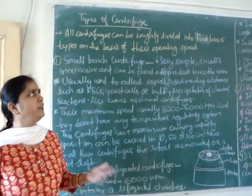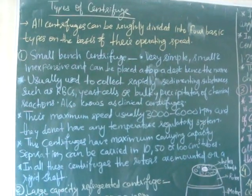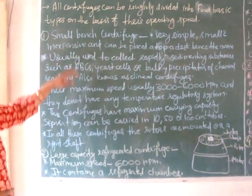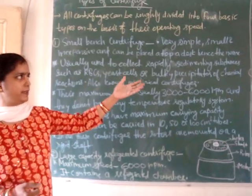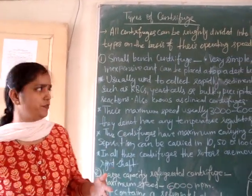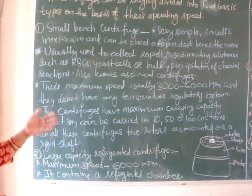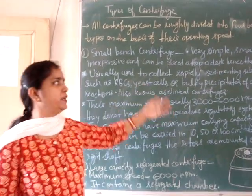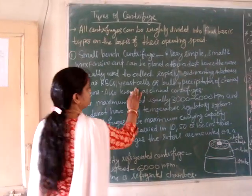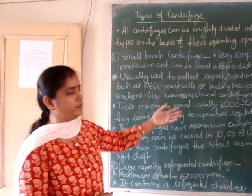All centrifuges can be roughly divided into four basic types on the basis of their operating speed. The first one is a small bench centrifuge. It is very simple, small, and inexpensive, and can be placed on the upper desk. Small bench centrifuges are sometimes also known as desktop centrifuges, and are usually used to collect rapidly sedimenting particles or substances such as RBCs.